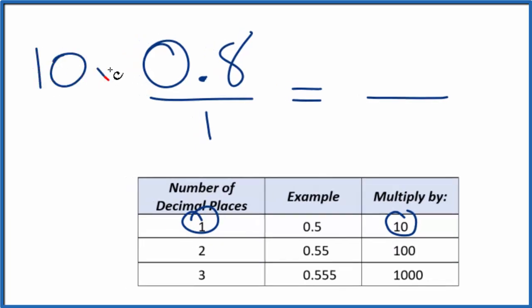So 10 times 0.8, that gives us 8. That's a whole number. So our numerator is now a whole number.